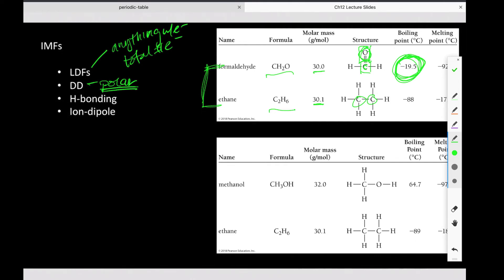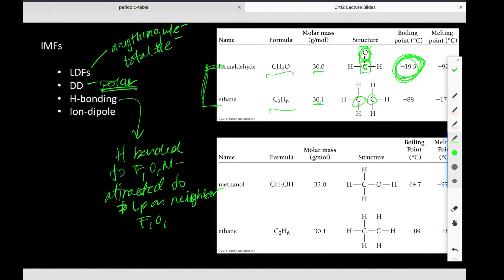Then that brings us also to hydrogen bonding, which is very specific. We have to have a hydrogen bonded to an F, O, or N. Must meet that criteria, and then it is attracted to lone pairs on neighboring F, O, or Ns. So it must meet that whole definition to qualify for hydrogen bonding. H bonded to F, O, or N, and attracted to lone pairs on neighboring F, O, or Ns.